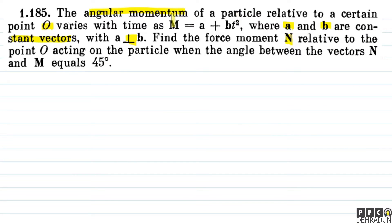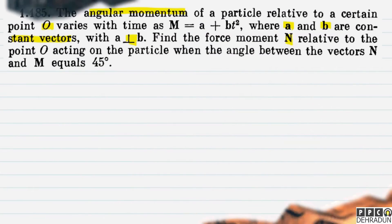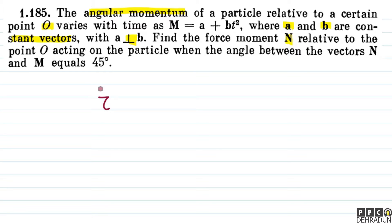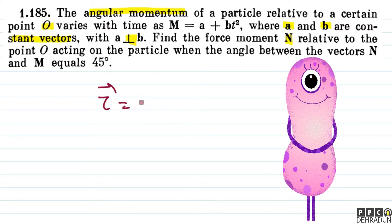So, let's see what we have given in this question. We have given that angular momentum of a particle relative to a certain point O varies with time as m vector equals a vector plus b vector into t squared, where a and b are constant vectors and the angle between them is 90 degrees. We have to find the force moment n vector relative to point O acting on the particle when the angle between n vector and m vector is 45 degrees.